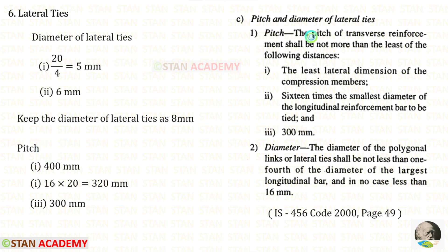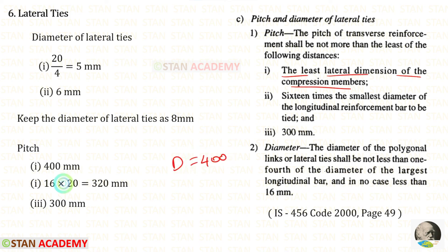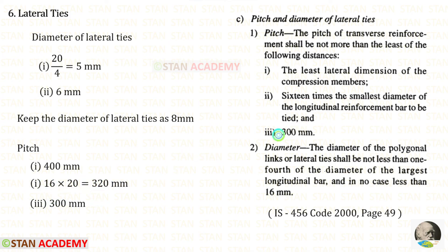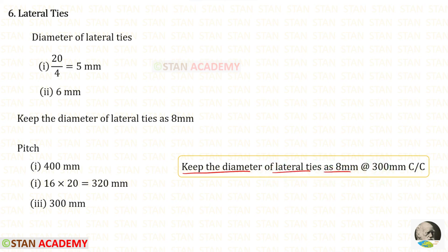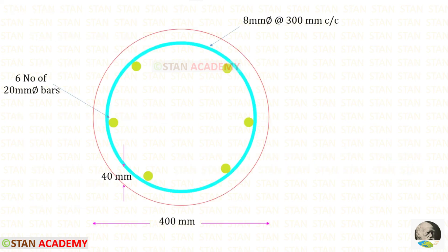Now let us find the pitch. The pitch of transverse reinforcement shall not exceed the least of: the least lateral dimension = 400 mm; 16 times the smallest diameter of longitudinal bars = 16 × 20 = 320 mm; and 300 mm. The smallest of these three is 300 mm. So we keep lateral ties of 8 mm diameter at a spacing of 300 mm. The clear cover is taken as 40 mm. Thank you for watching this video.